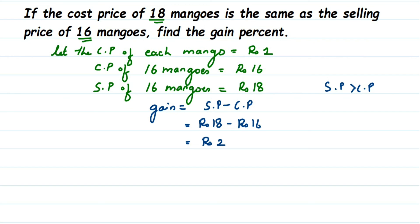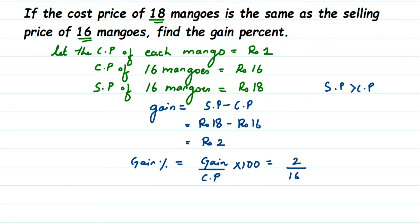Now we find the gain percentage. The formula is: gain percentage = (gain / cost price) × 100. We are talking about 16 mangoes, so cost price is 16 rupees and gain is 2 rupees. So gain% = (2 / 16) × 100. Simplifying: cancel 8 from 2×100 and 16, giving 25 × 2 / 4, which equals 12.5%. The answer is 12.5%.